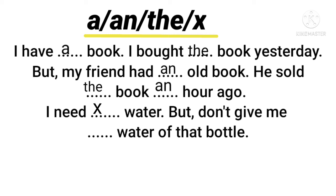But: 'Don't give me ___ water of that bottle.' Here we are talking about specific water, so we use 'the'. The correct sentence is: 'Don't give me the water of that bottle.' When we talk about uncountable nouns in general we use no article, but when we make them specific we use 'the'.